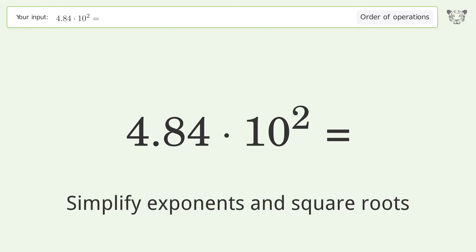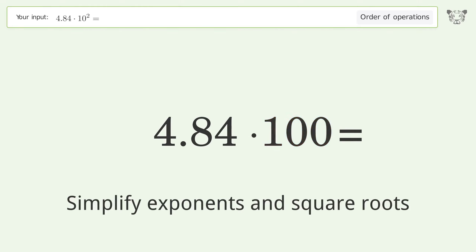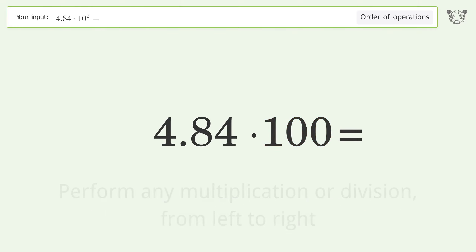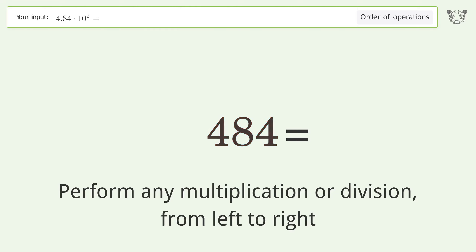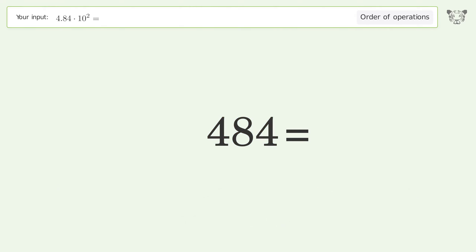First, simplify exponents and square roots: 10 to the power of 2 equals 100. Then perform multiplication or division from left to right: 4.84 times 100 equals 484. And so the final result is 484.